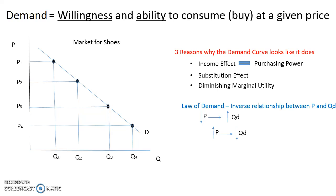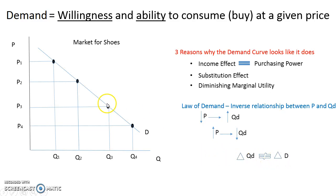A change in quantity demanded — indicated by the delta sign — is the movement along the demand curve as we change the price. It does not equal a change in demand. We'll get into a change in demand later in another screencast about the determinants that actually shift or create a whole new willingness and ability to consume at these prices. What is key is that a change in quantity demanded is dependent upon the change in price — the second you change the price, you change the quantity demanded.